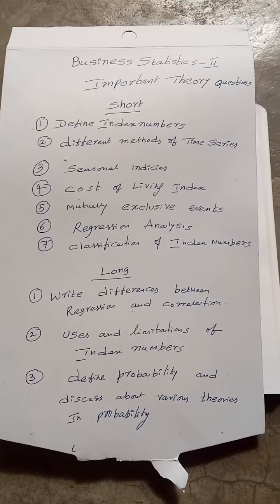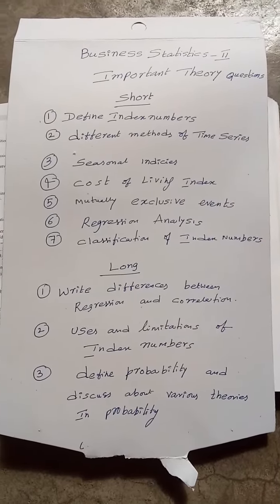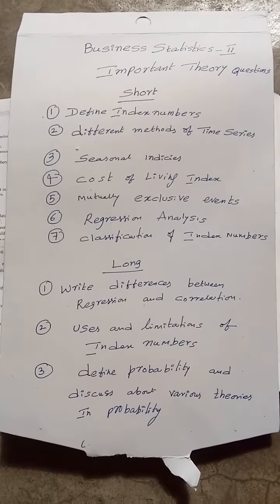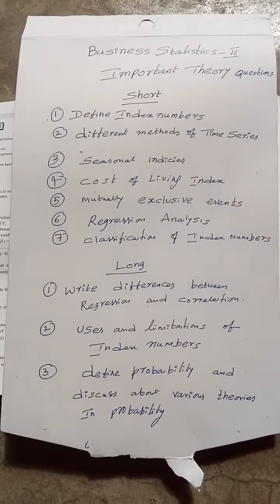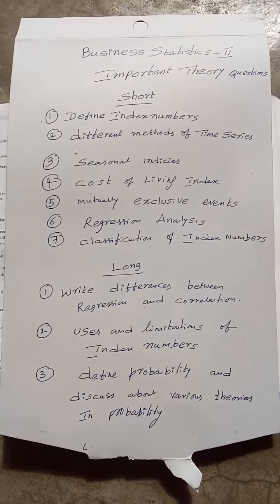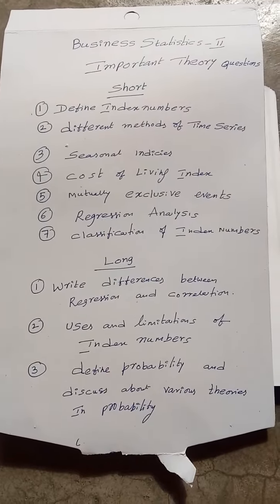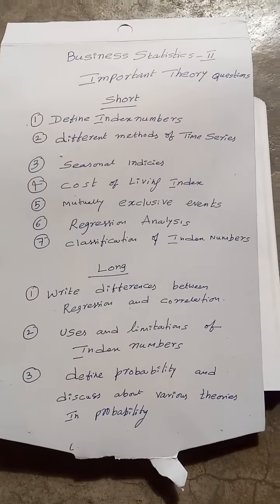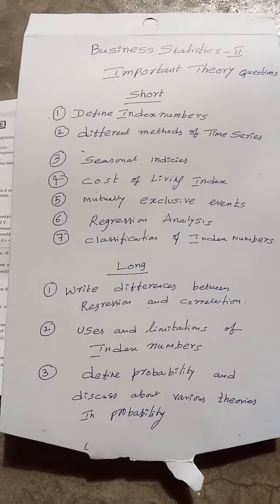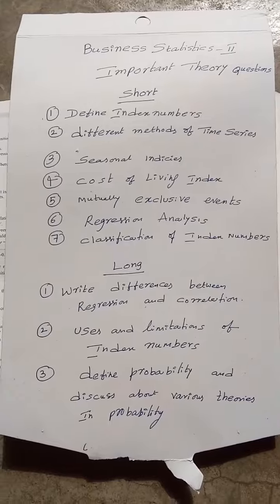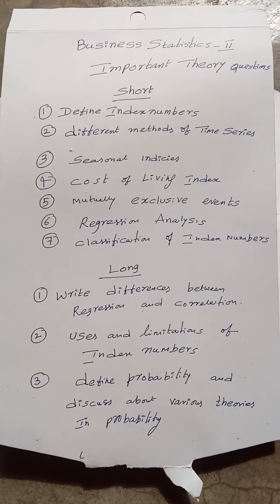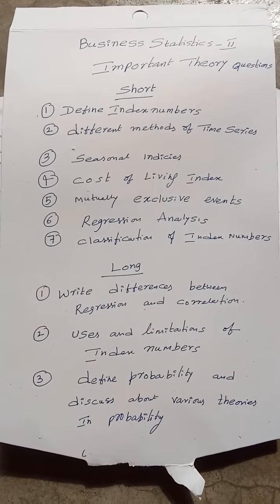And in index numbers, in short answer, you will get a question like cost of living index or family budget method. The family budget method is also a cost of living index that you may get.